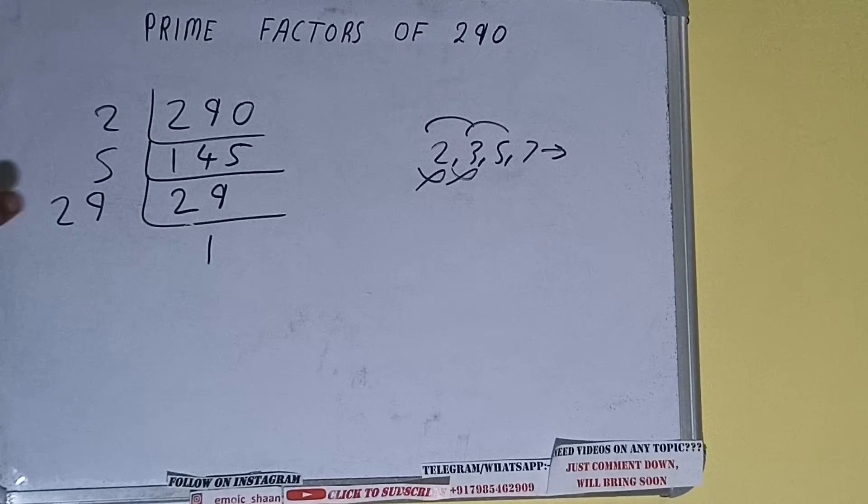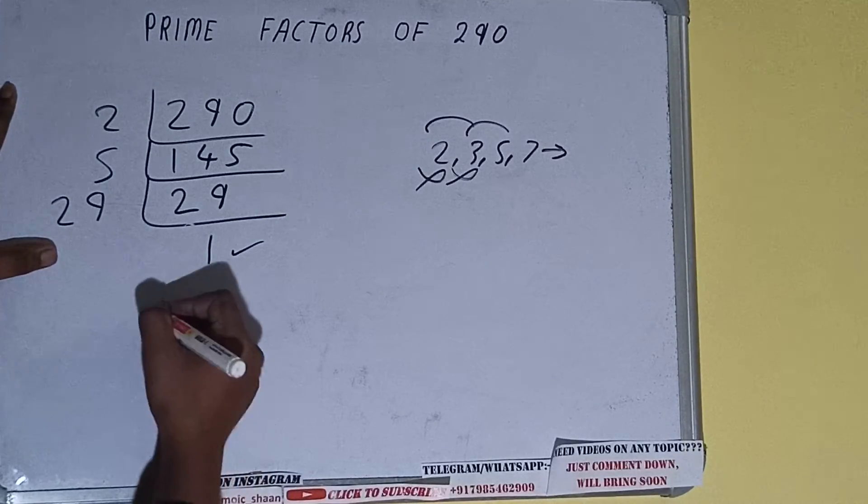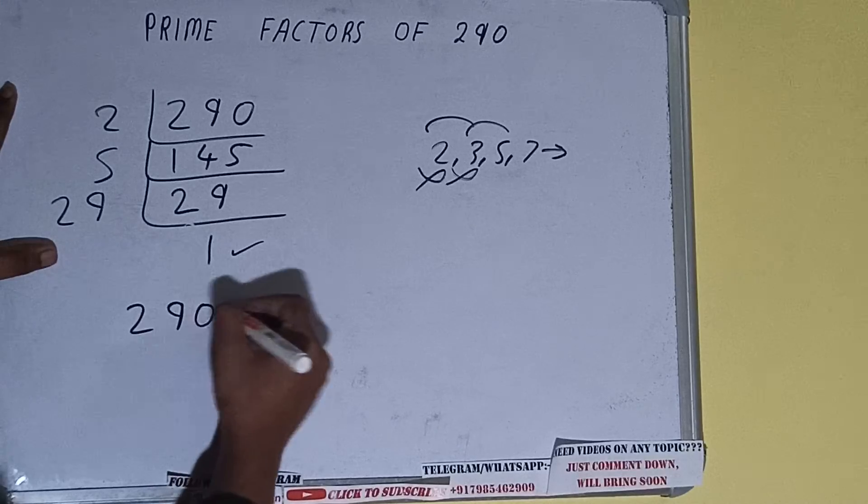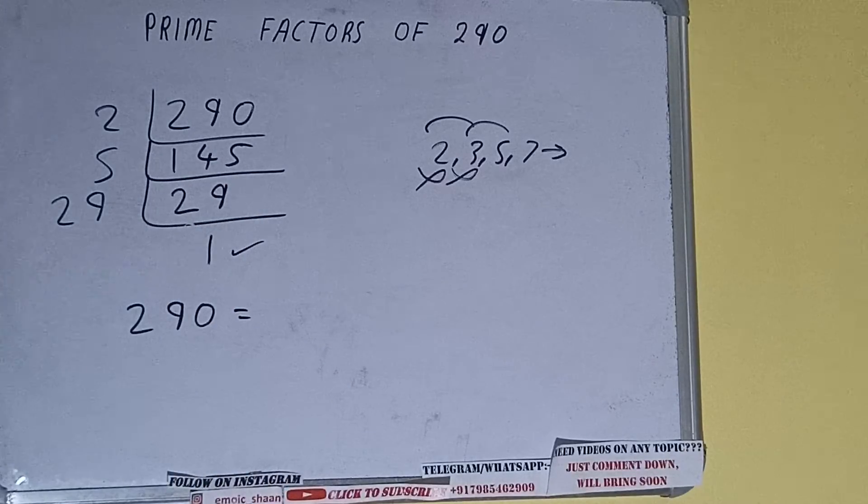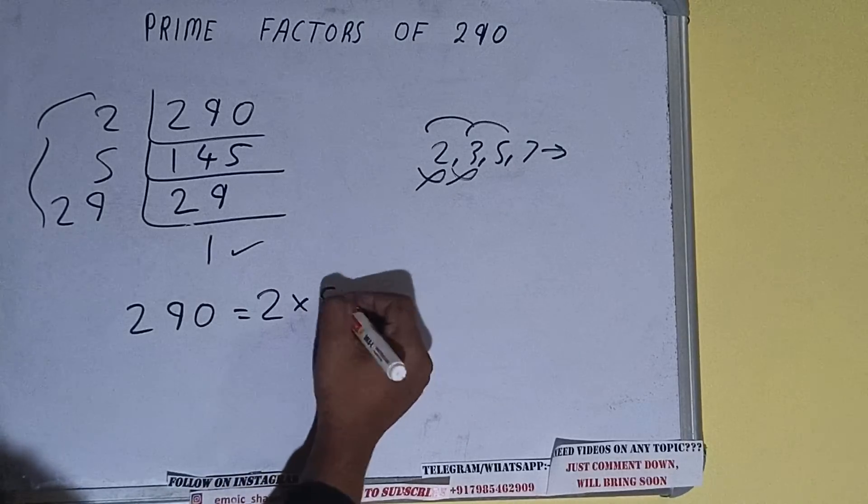Once we get 1, we need to stop and do one last thing. That is, prime factors of 290 equals multiply whatever we have on the left-hand side, that is 2 times 5